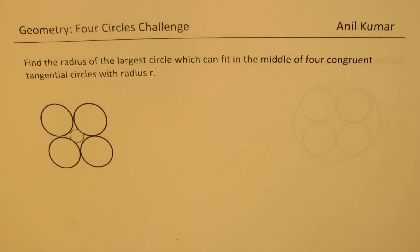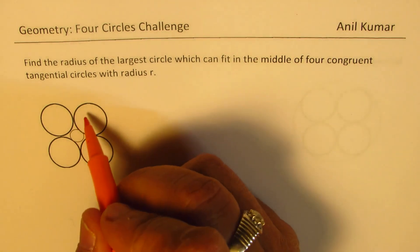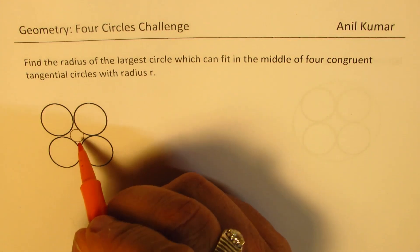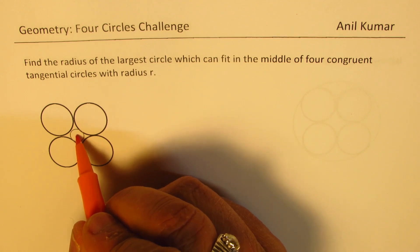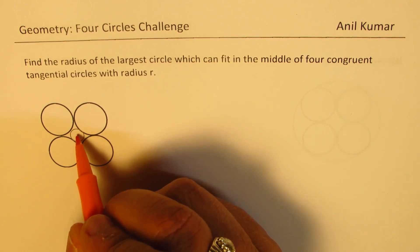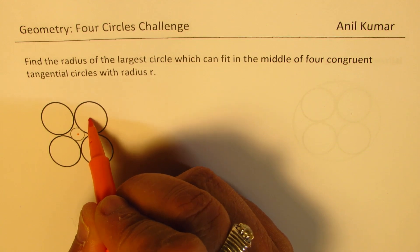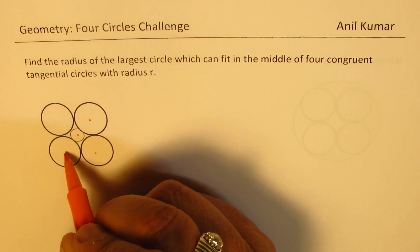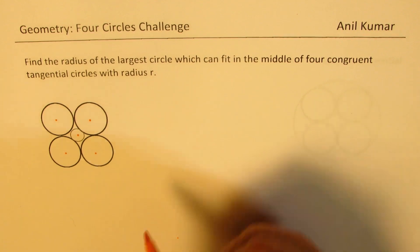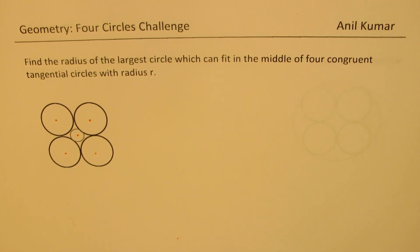The very first one here is: find the radius of the larger circle that can fit in the middle of four congruent tangential circles with radius r. So in this diagram, we are given four tangential circles arranged in this fashion. We need to find the radius of this circle which can fit in the center of these. How do we figure this out? You can always pause the video and answer this question. It seems to be difficult, but it is relatively simple.